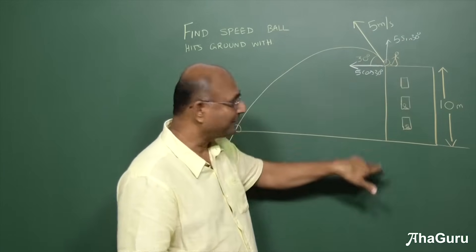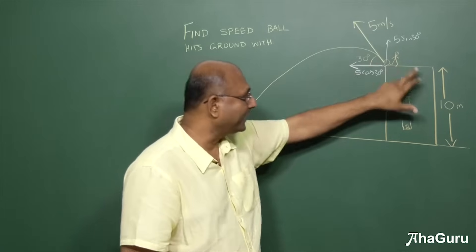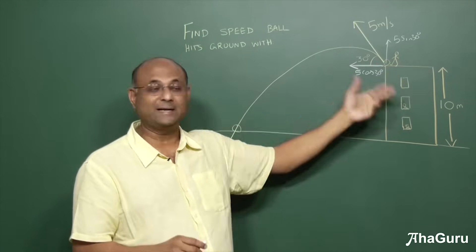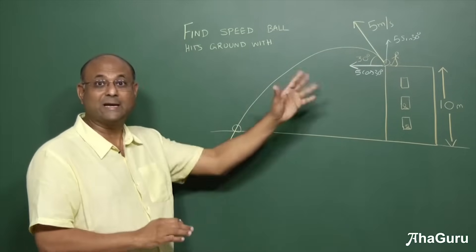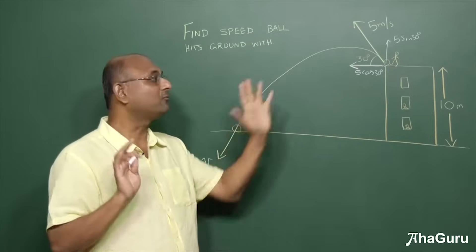And then you will use the fact that it is vertical motion. You can write S is equal to UT plus half AT squared. Here, simplify, find time, etc. and solve the problem. But that's really long. If you get into that approach, you will take at least 3 to 4 minutes to solve the problem.